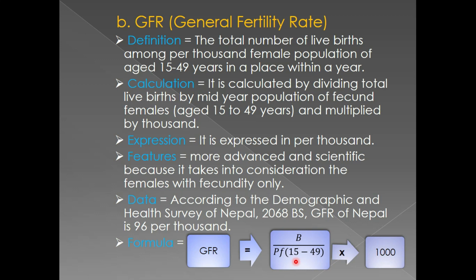In this way you can easily define GFR. Now please look at the slide: definition, calculation, expression, features, data, and formula. The definition is: the total number of live births among per thousand female population of age 15 to 49 years in a place within a year. It is calculated by dividing total live births by the mid-year population of fecund females — females from 15 to 49 years — multiplied by 1000.